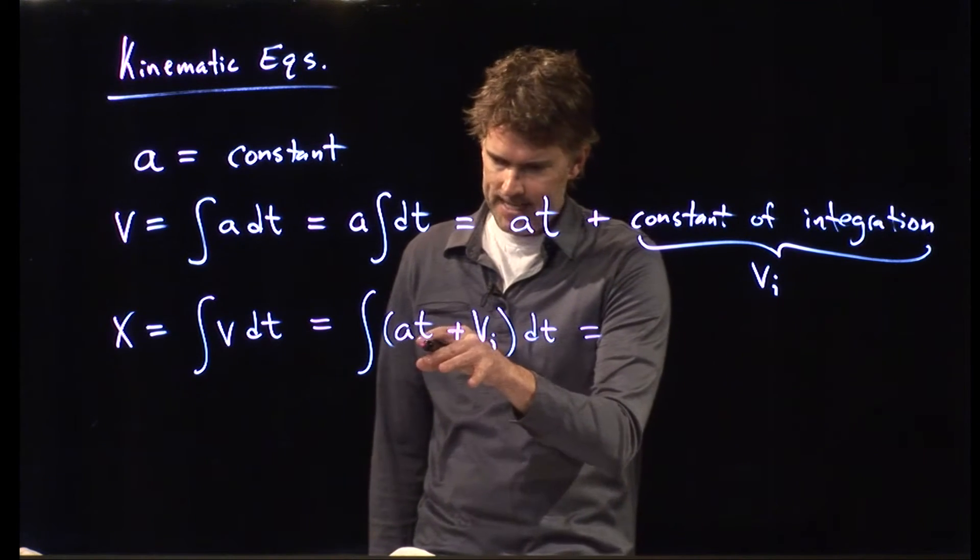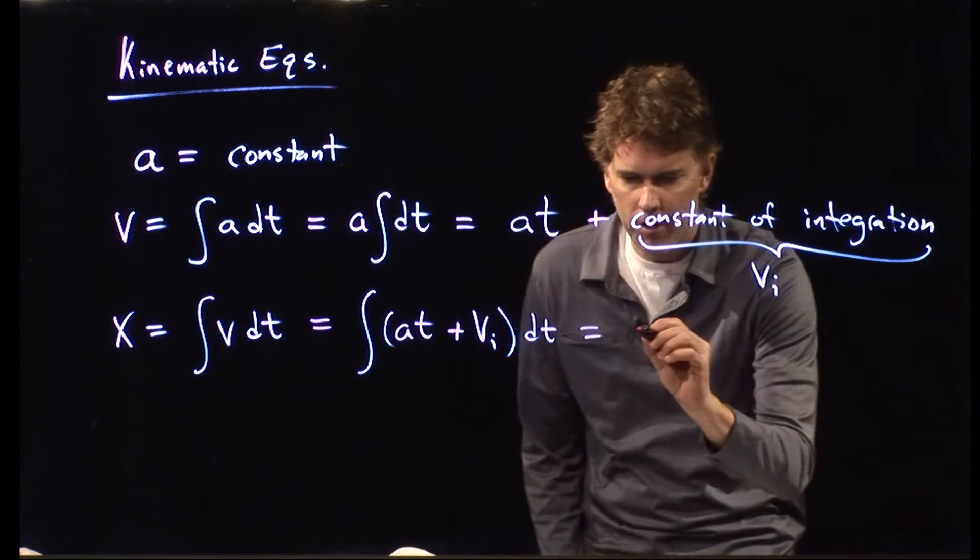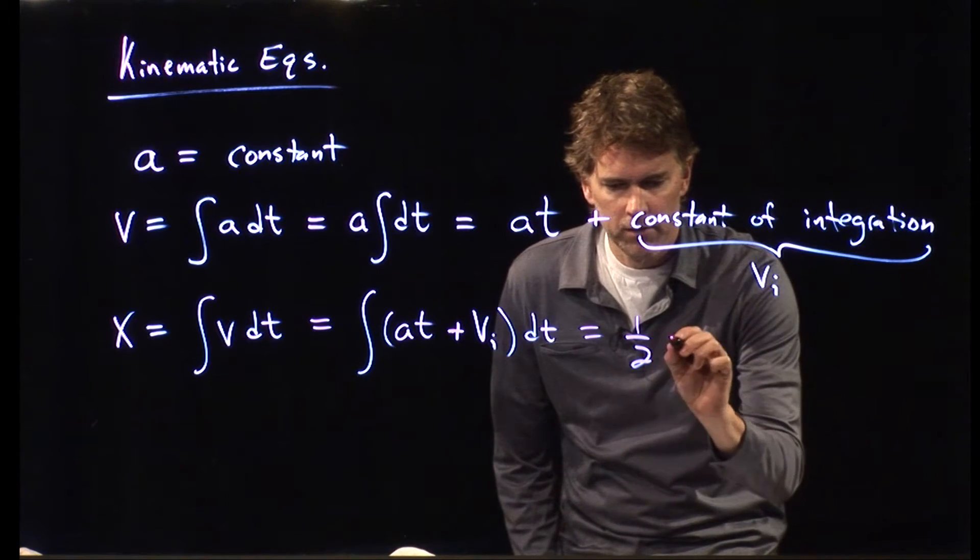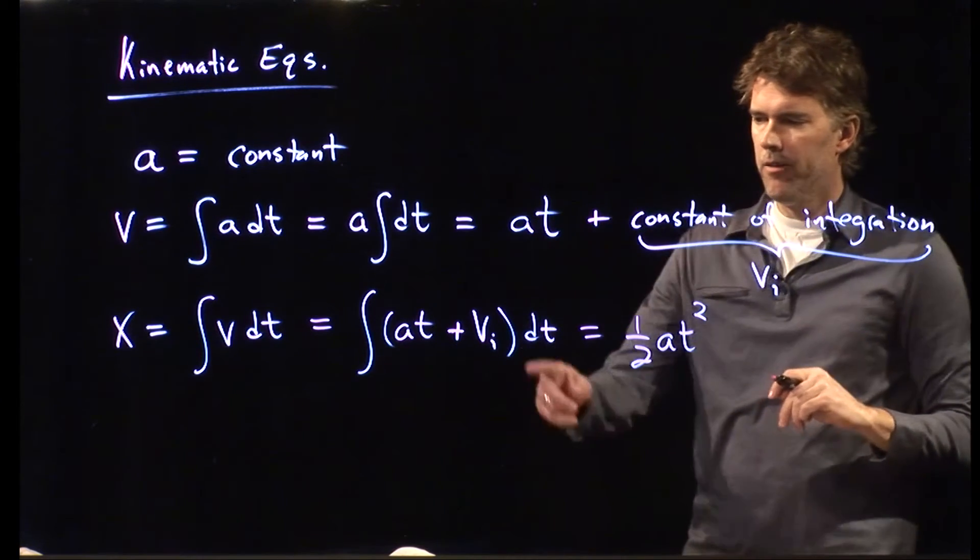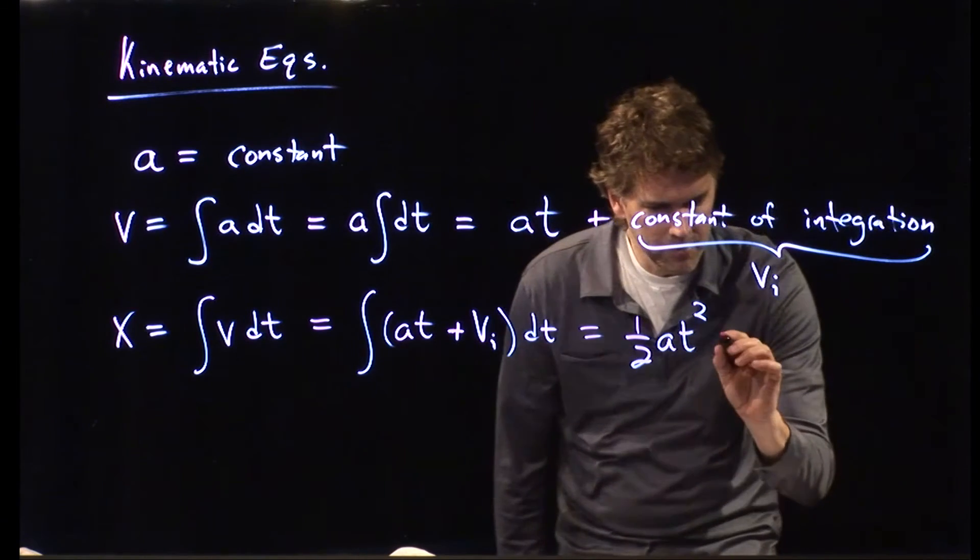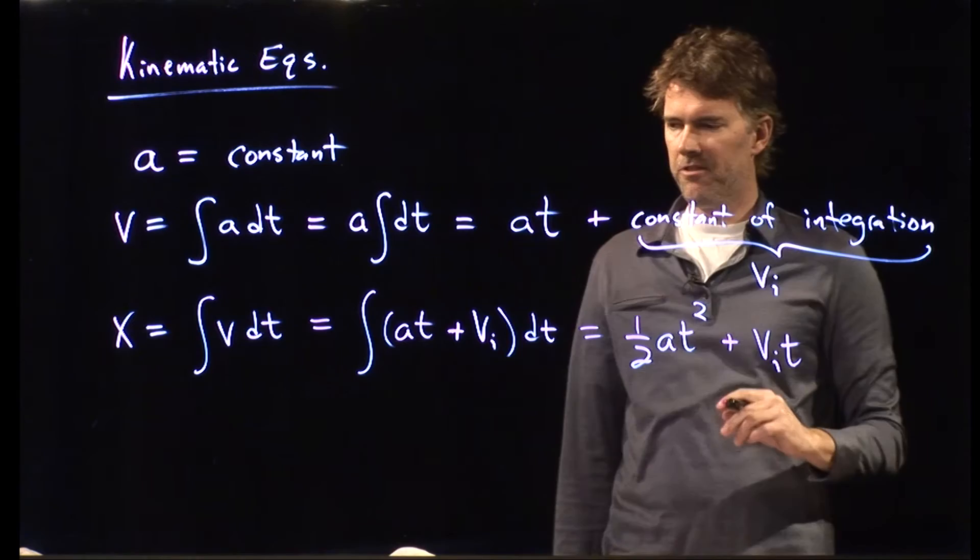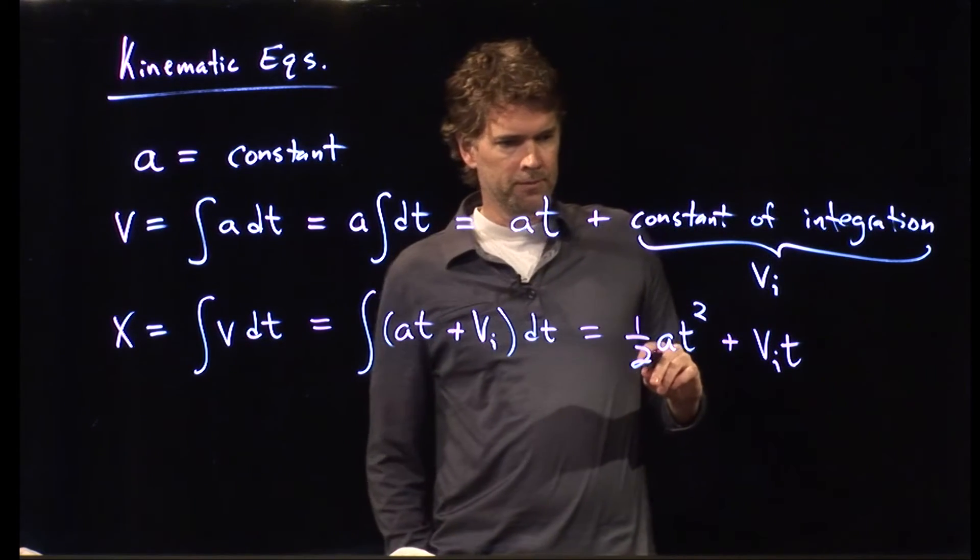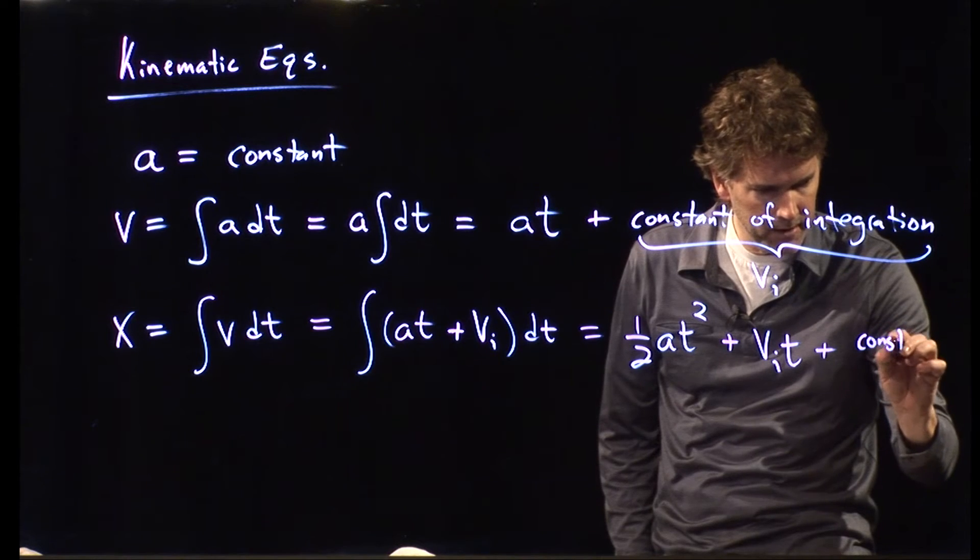a is a constant. But the integral of t becomes t squared over 2. So I get one half a t squared. v i is initial velocity. And that's a constant. So we just add v i times t. And then we have to add another constant of integration.